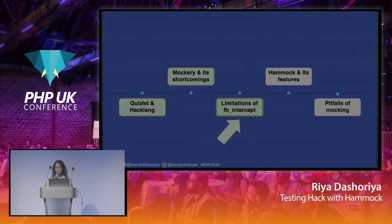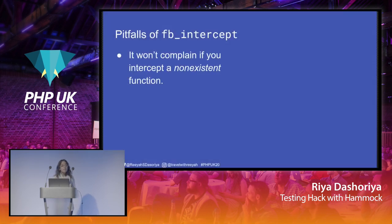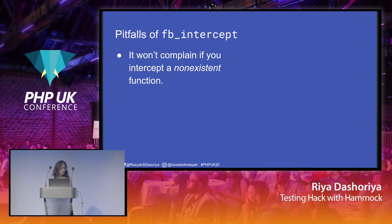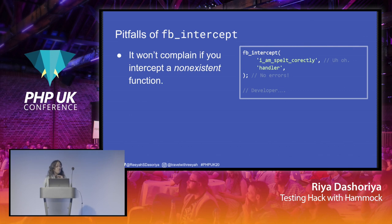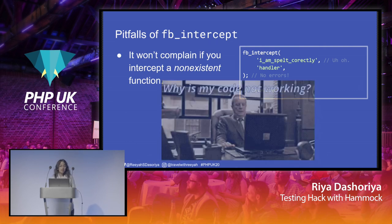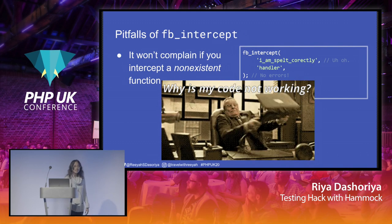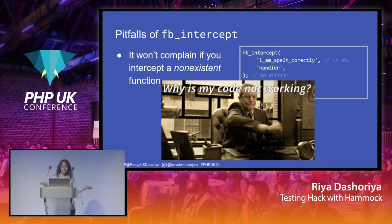First, FB Intercept won't complain if you are intercepting a non-existent function. There are times when you rename a variable or flip characters in a name, and it makes no sense. There's a lot of room for human error. In this case, if I'm intercepting a function but the name is misspelled, FB Intercept will not show any error even if the function does not exist. And then we will keep wondering, 'I mocked the function correctly — why am I not seeing any errors?' This makes no sense.